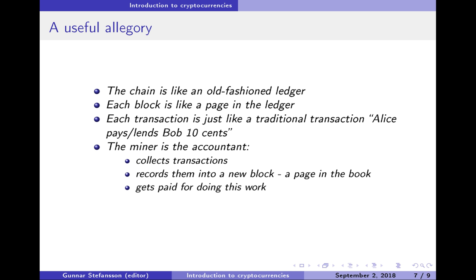And a transaction in cryptocurrencies is exactly the equivalent of a traditional transaction. So if Alice pays Bob 10 cents, then that gets recorded on a page in the ledger. In cryptocurrencies, it's a little bit more like a ledger which is designed to keep track of lending. But nonetheless, transactions are just like traditional transactions.